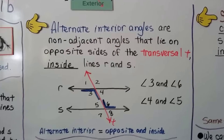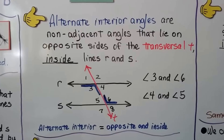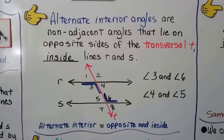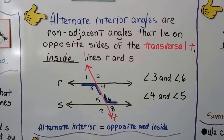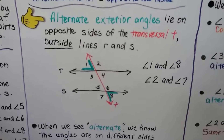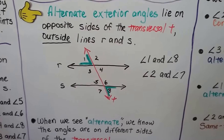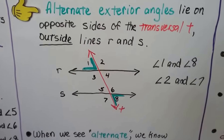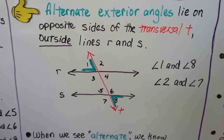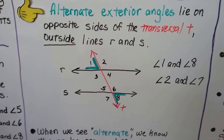Alternate interior angles are on opposite sides of the transversal T but inside lines R and S. Angles 3 and 6 are alternate interior angles, and angles 4 and 5 are alternate interior angles — they're on opposite sides of the transversal but inside R and S. Alternate exterior angles lie on opposite sides of transversal T outside lines R and S. Angles 1 and 8 are on opposite sides of T and outside R and S. Angles 2 and 7 are also on opposite sides of the transversal and outside R and S — those are alternate exterior angles.